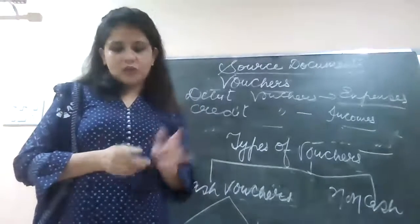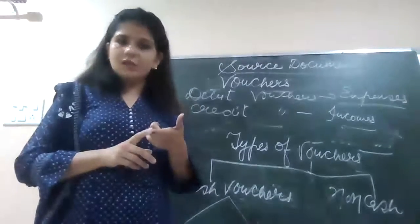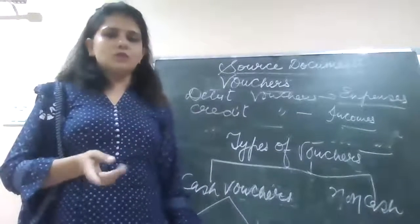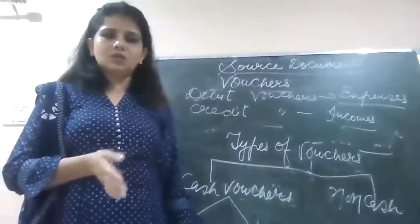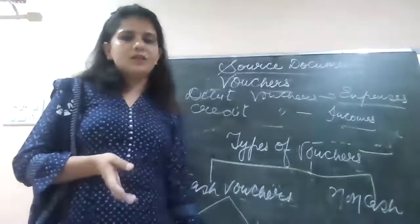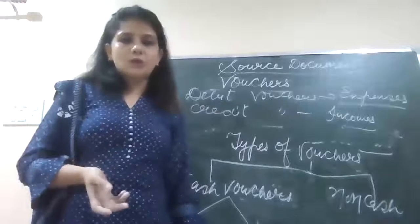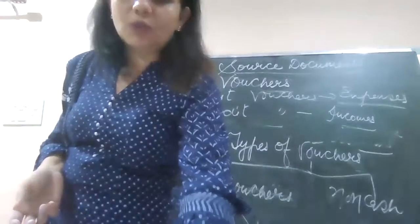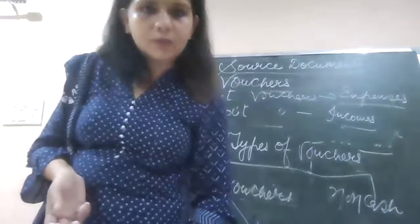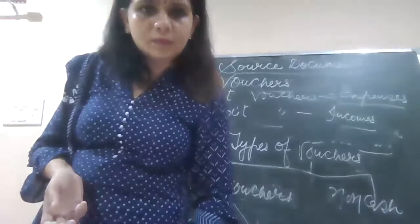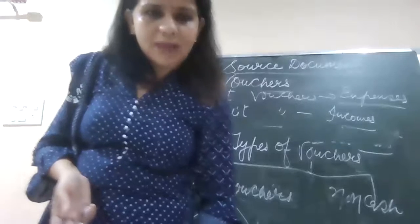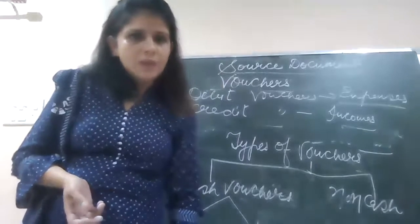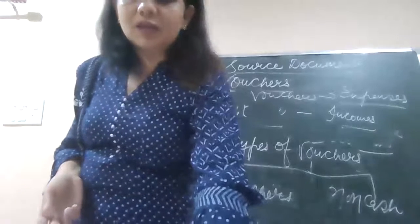Here we end this chapter. The chapter name was accounting equation, rules of debit and credit - we covered real, personal and nominal accounts - then we picked source documents and vouchers. So many questions are there for your practice. You have to solve back exercise questions. If no questions are solved on Monday I can take your problems, otherwise I will proceed to the next topic.